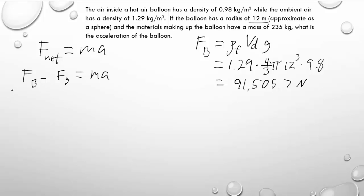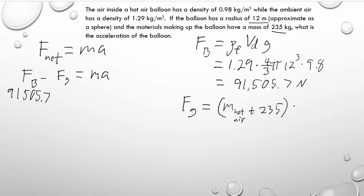We plug that in: 91,505.7 newtons. Now we need to subtract the gravitational force. It's not as simple as 235 times 9.8, because the air inside the balloon also moves up with it — and even though it's not very dense, there's so much of it that it has a significant mass. The gravitational force equals the mass of the hot air plus the 235 kilograms of the balloon material and basket, all times 9.8. To find the mass of the hot air, we use mass equals density times volume.